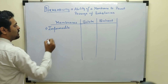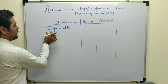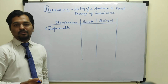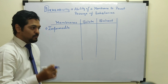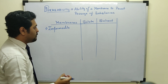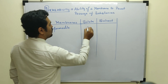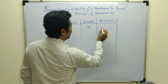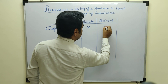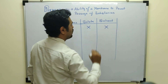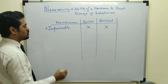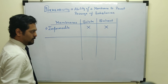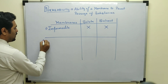The first type is the impermeable membrane. From the name itself it is clear — it gives permission to no one. That means a membrane which does not allow solute molecules, neither does it allow solvent molecules to pass through, is considered an impermeable membrane.